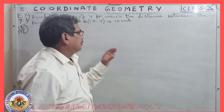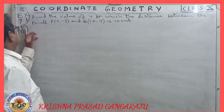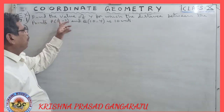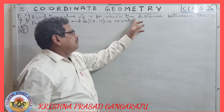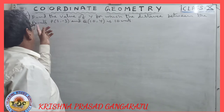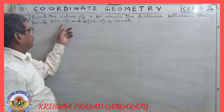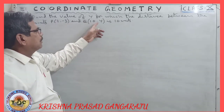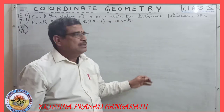Hi, here is one question — question 11 in exercise 7.1. Find the value of y for which the distance between the points P(2, -3) and Q(10, y) is 10 units.